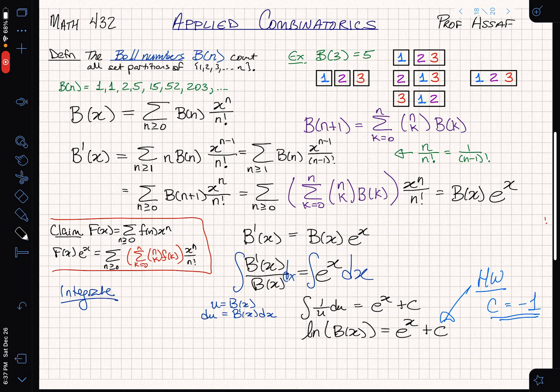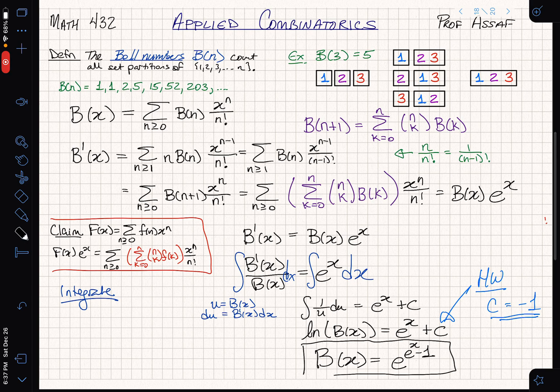Think about how you can derive this form and figure out that c is equal to minus 1. But let's take that as a fact. Now I'm going to exponentiate both sides of the equation to finish and get B(x) is equal to e to the e to the x minus 1. This is our closed formula for the generating function, the exponential generating function of the Bell numbers.